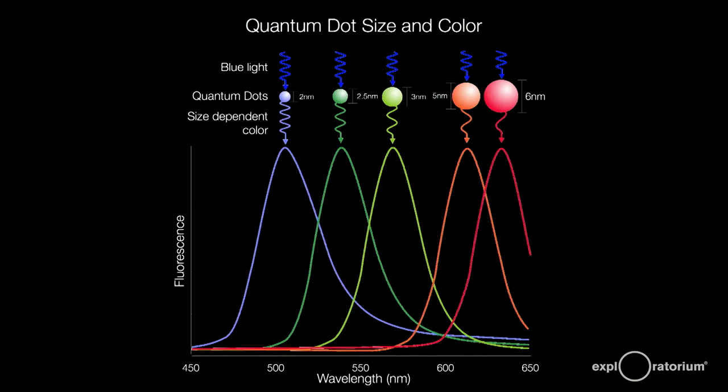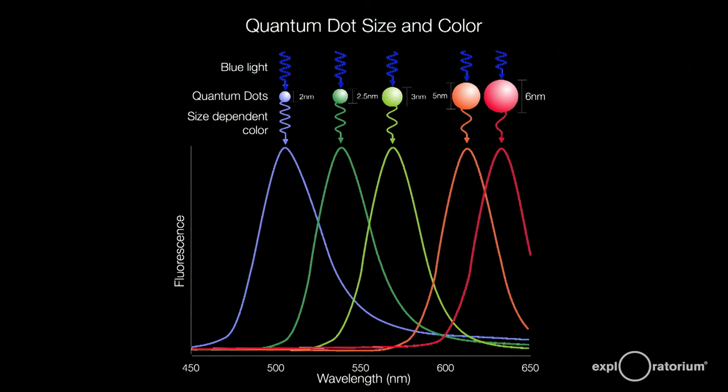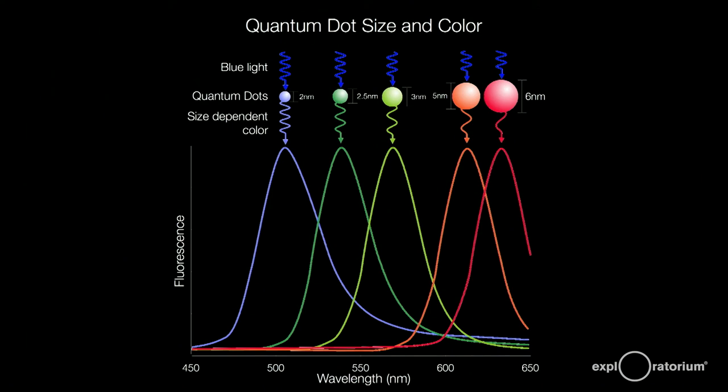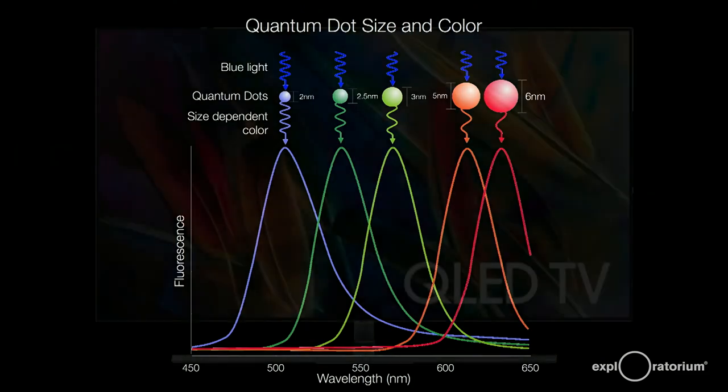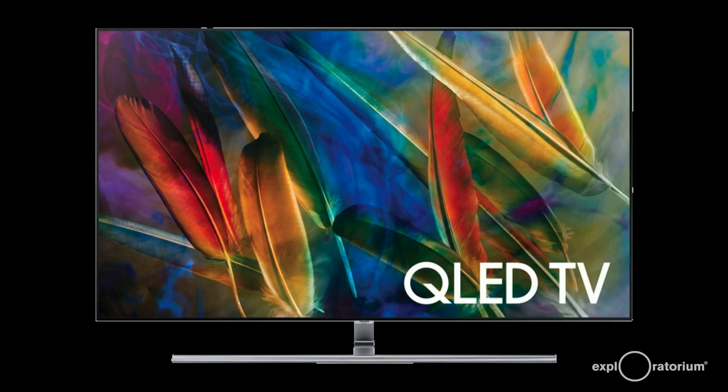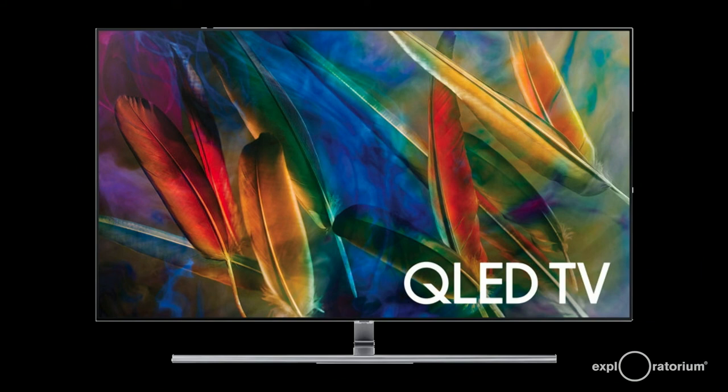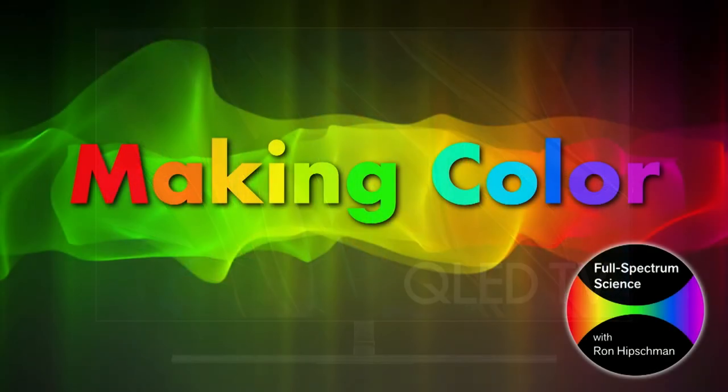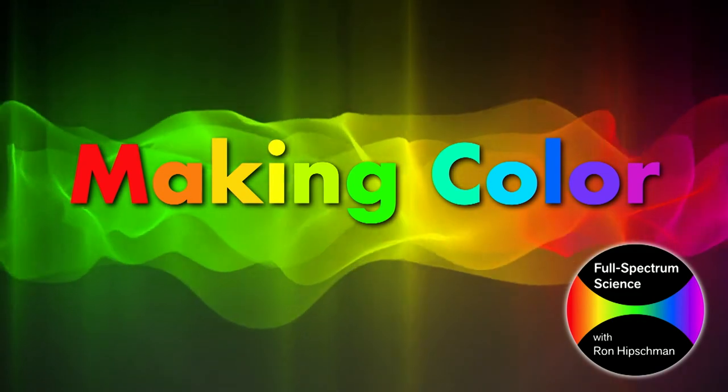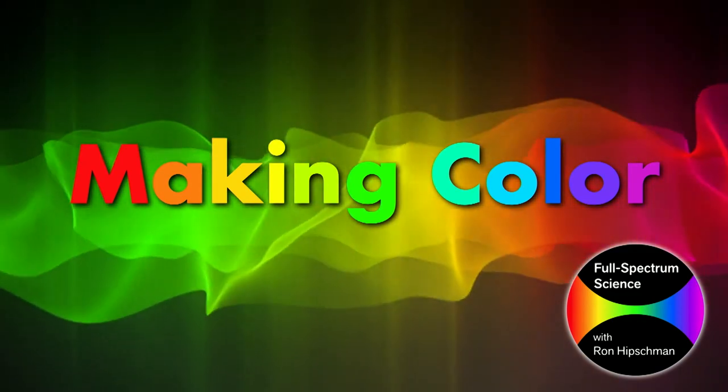Here you can see the color curves for different sized quantum dots. Note that the dots are very small, from two to six nanometers, billionths of a meter in diameter. You can imagine the difficulties in manufacturing these. They're beginning to use quantum dots in flat panel TVs behind the LCD as a source of light that matches the colored filters in front of the panel. This makes for brighter and more saturated colors. And that is all we have time for today in this episode of Full Spectrum Science.